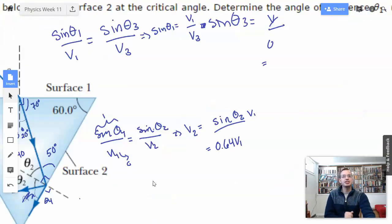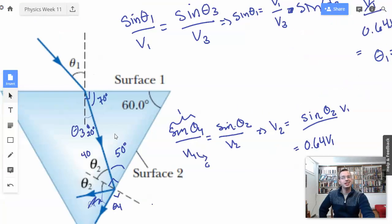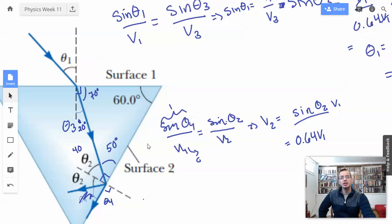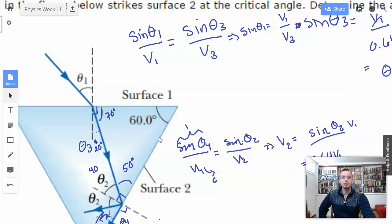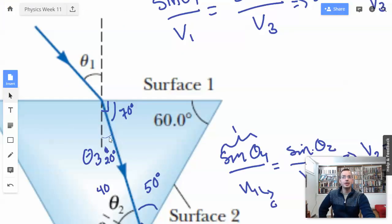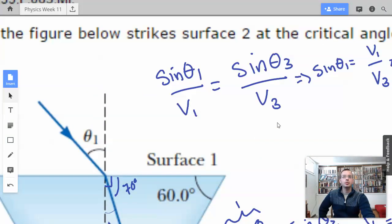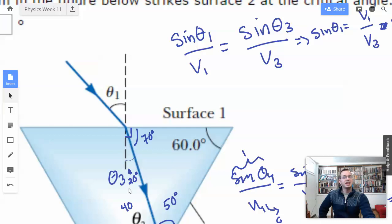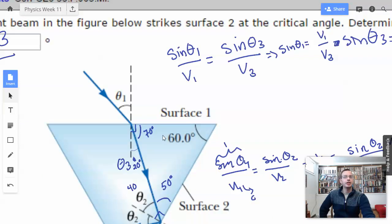And that gives us a chance to find V2, which is the speed inside the prism, the thingy-majigger that got struck by the light. We then used angles and perpendiculars to find this angle right here, which is 20. We then used Snell's Law again, with our new found information about the speed of light inside the material, to then find the initial angle.